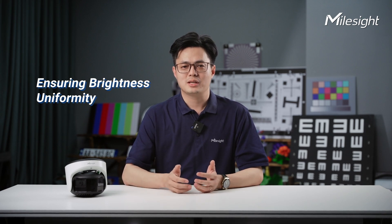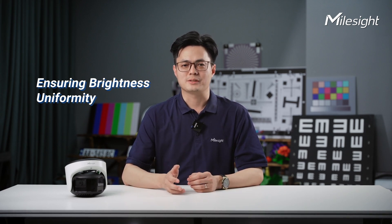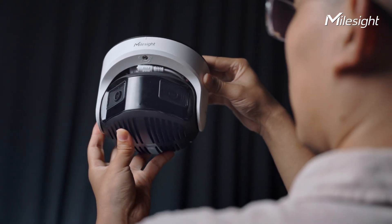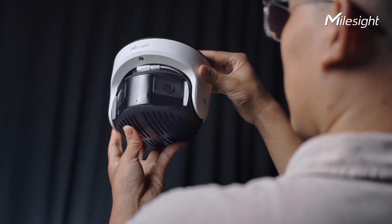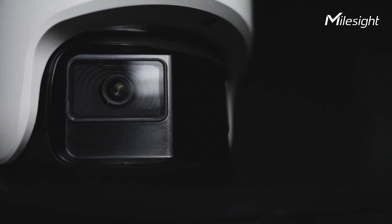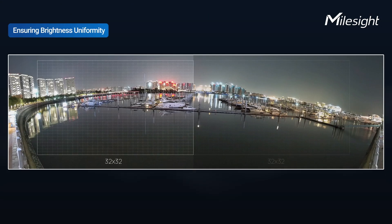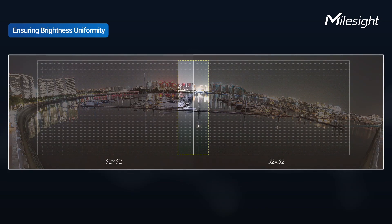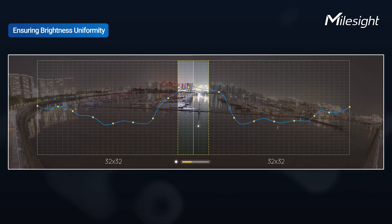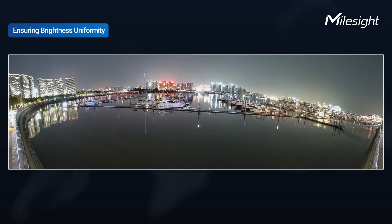Second, advanced algorithms ensuring brightness uniformity. Given the inherent difference in light sensitivity between its lenses, Milesight's R&D team has worked on both algorithm and hardware to address the challenge of keeping uniform brightness even across panoramic images. By using a 32x32 mesh shading algorithm, we divide the images into small cells and analyze the brightness of each part, allowing the algorithm to adjust and balance the light, ensuring consistent brightness across both sensors.